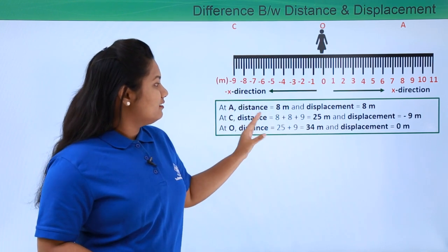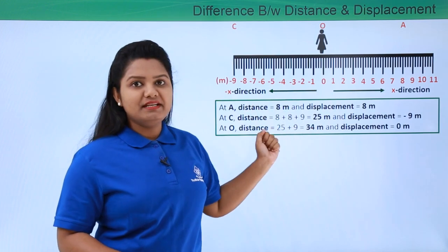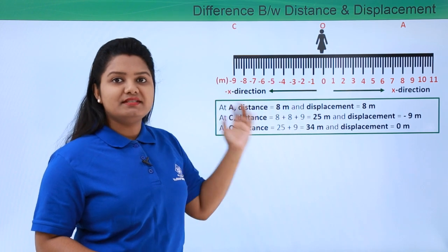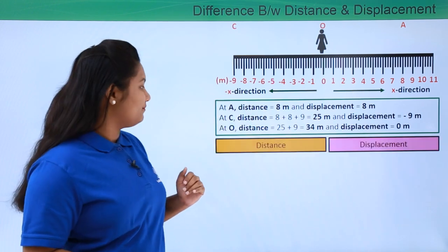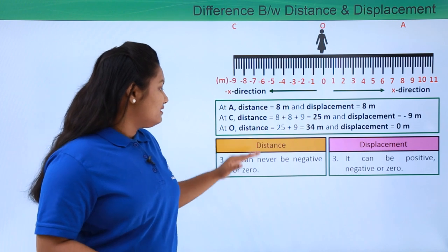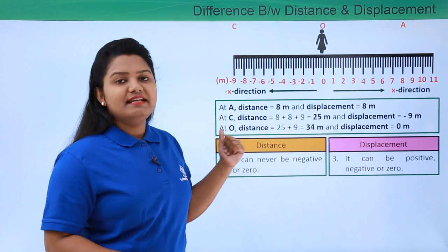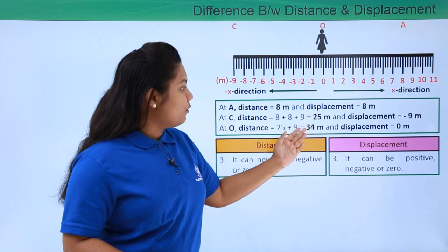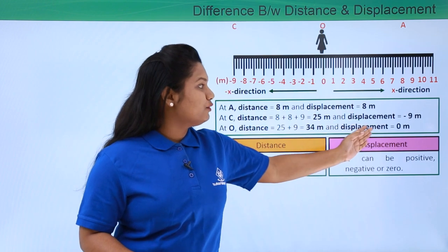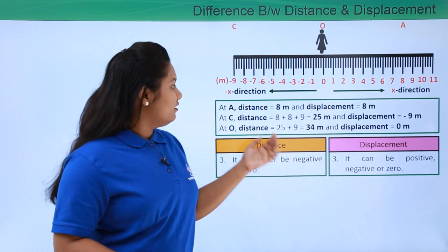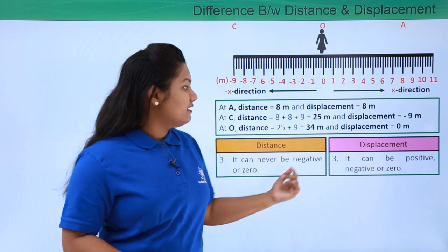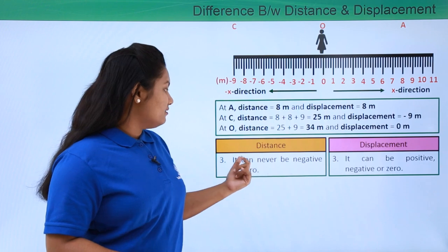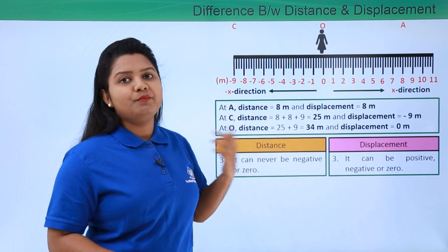We can see that there is a difference in distance and displacement values in this case, and from this situation we can figure out some more differences. Distance can never be zero or negative — as we can see here, it is always positive. But the displacement has become zero, negative, and positive. So we can say that the displacement can be positive, negative, or zero, but the distance can never be negative or zero; it is always positive.